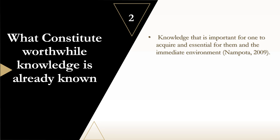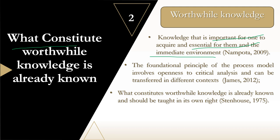What constitutes worthwhile knowledge? This is knowledge that is important for one to acquire and essential for them and their immediate environment. This may differ from person to person — for example, knowledge about fishing may not be relevant to someone who doesn't live near water, whereas hunting knowledge might be more relevant. The fundamental principle of the process model involves openness and critical thinking.